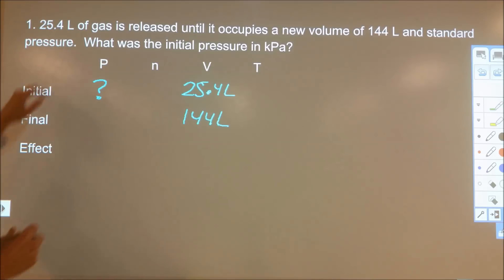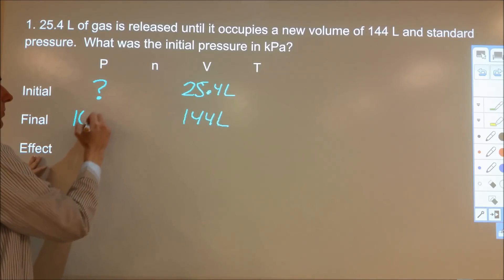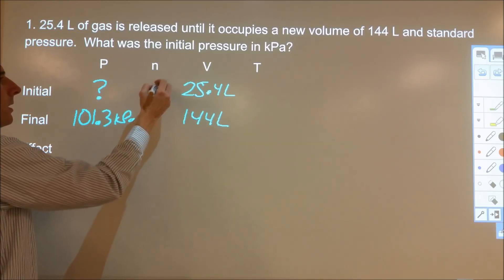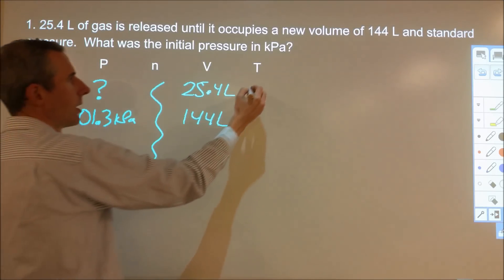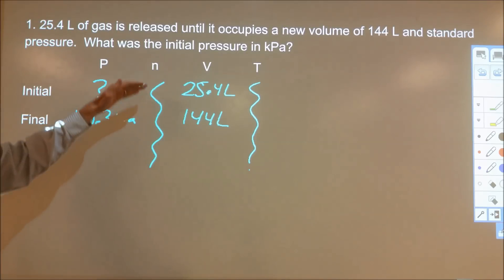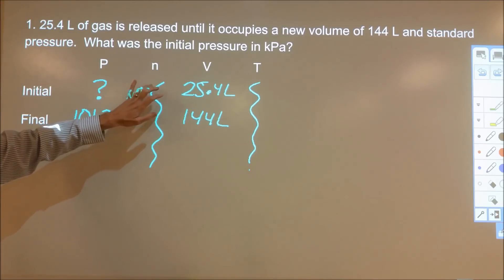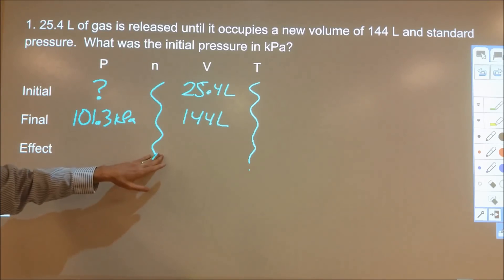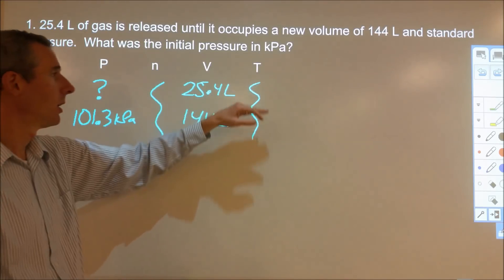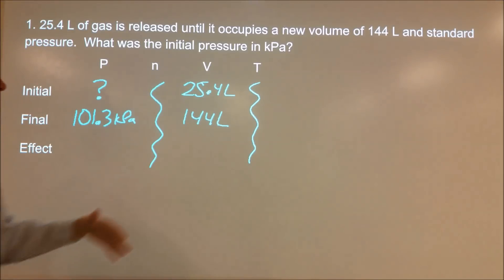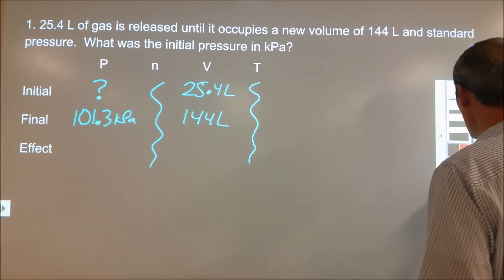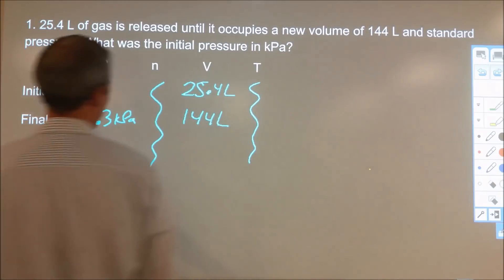We're in kilopascals, so using standard pressure in kilopascals, that's 101.3 kilopascals. The amount we're going to assume is constant, and the temperature we're going to assume is constant because they aren't mentioned. Constant means it's the same before and after — a proportion of one — which means it will have no effect on how the pressure changed. So when we go to the figuring, we want to ask: the volume changed in this manner — what does that mean about how the pressure changed?